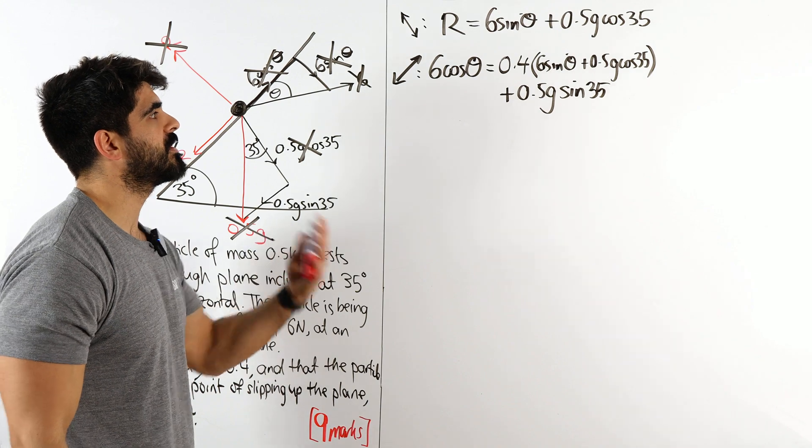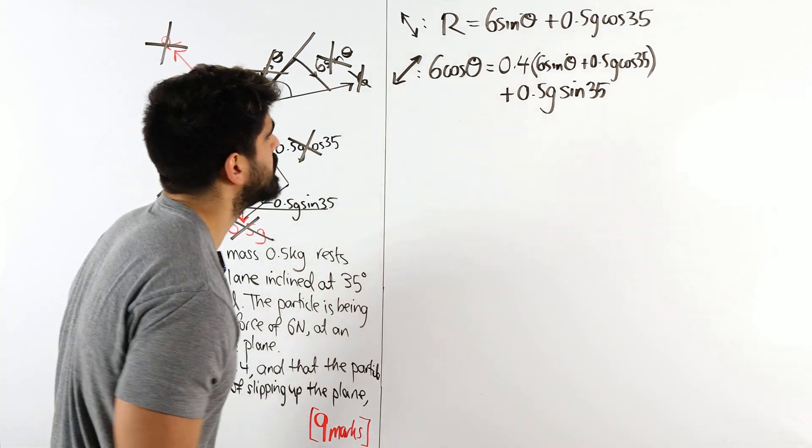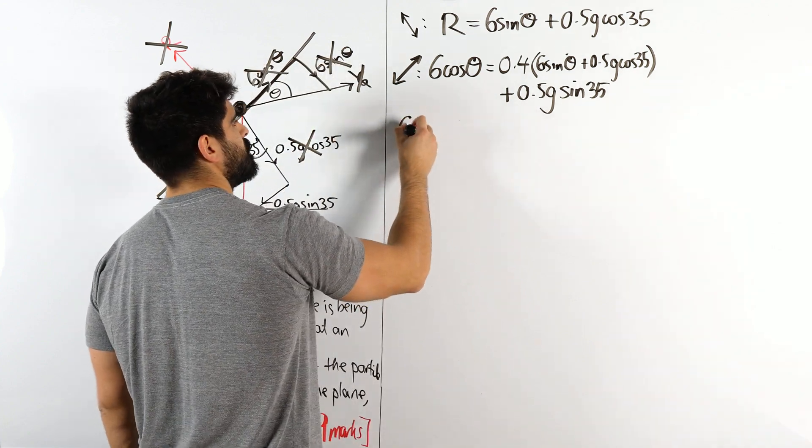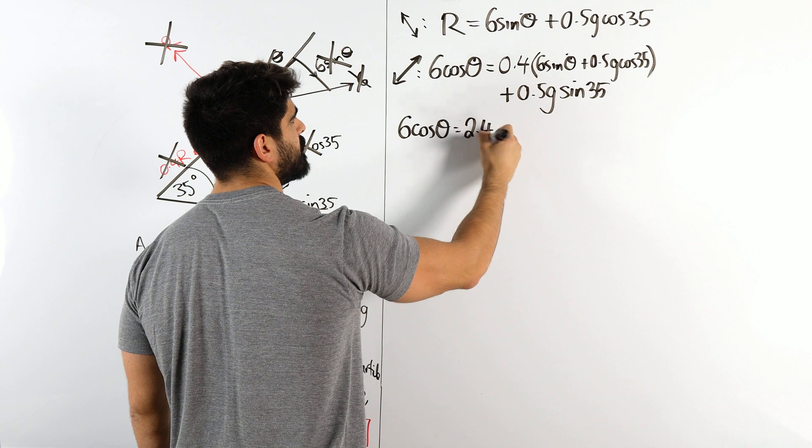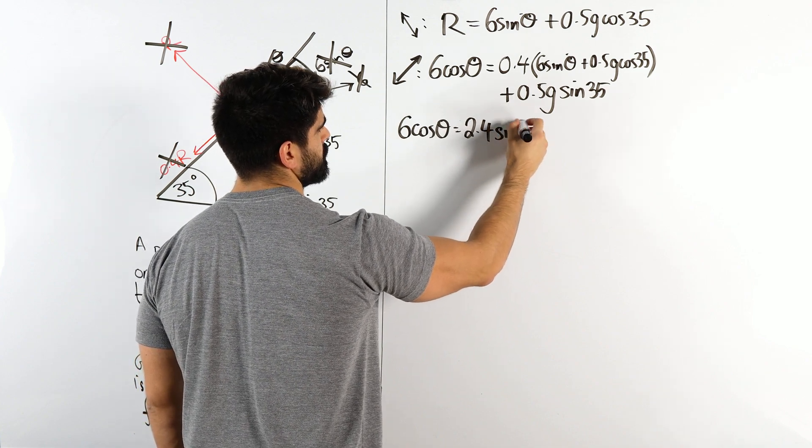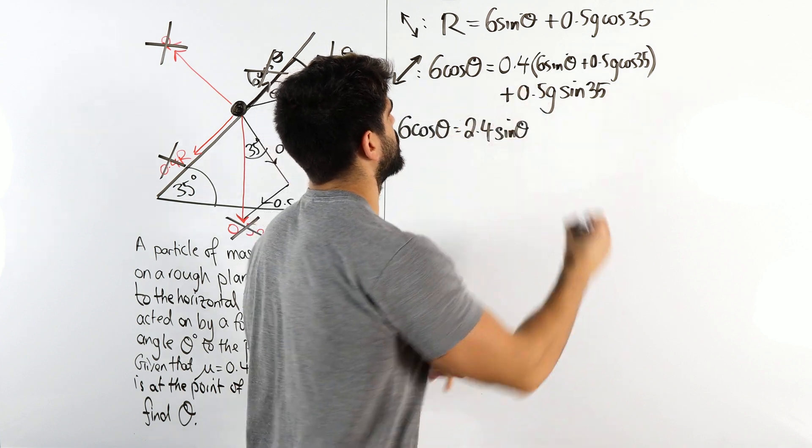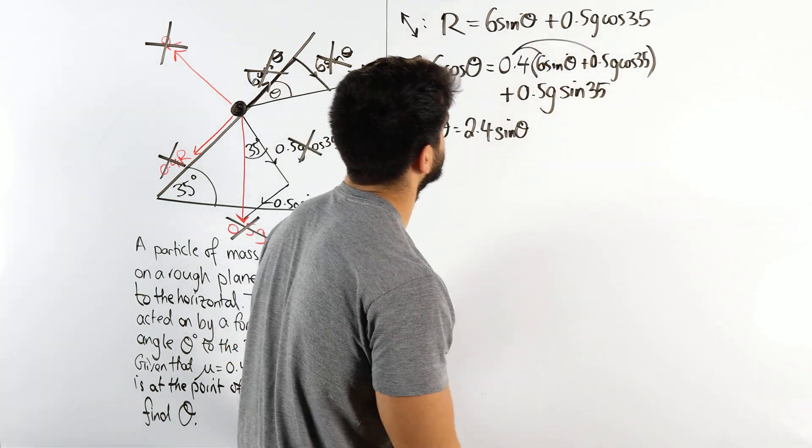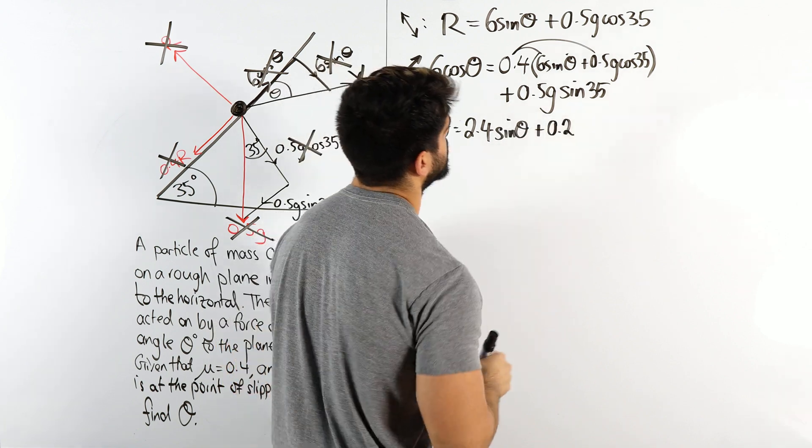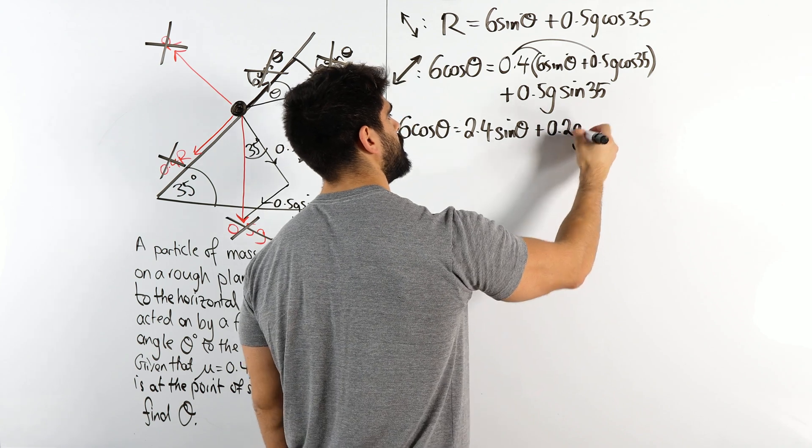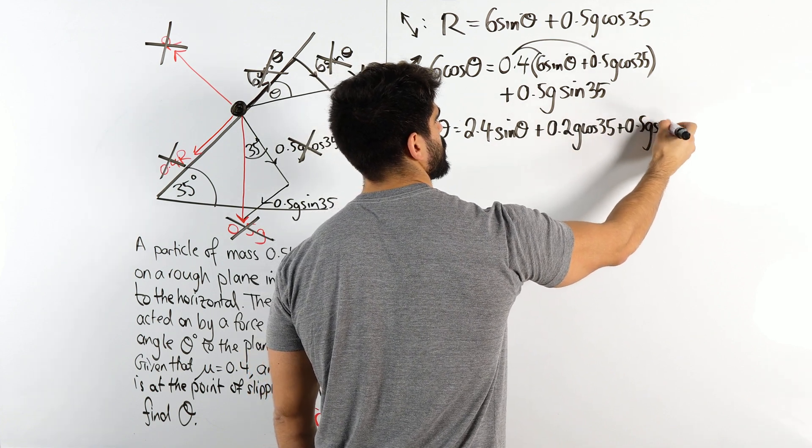Now we're trying to work out theta, right? So we're going to expand everything, bring all that stuff to one side and we will see what happens. So what have we got? We've got 6 cos theta - 0.4 times 6 is 2.4 sin theta. Just double checking. Yeah, six times four, 24. So like I said, you can use a calculator for that. 0.4 times 0.5, a half of 0.4 is 0.2. So we get plus 0.2g cos 35 and 0.5g sin 35.